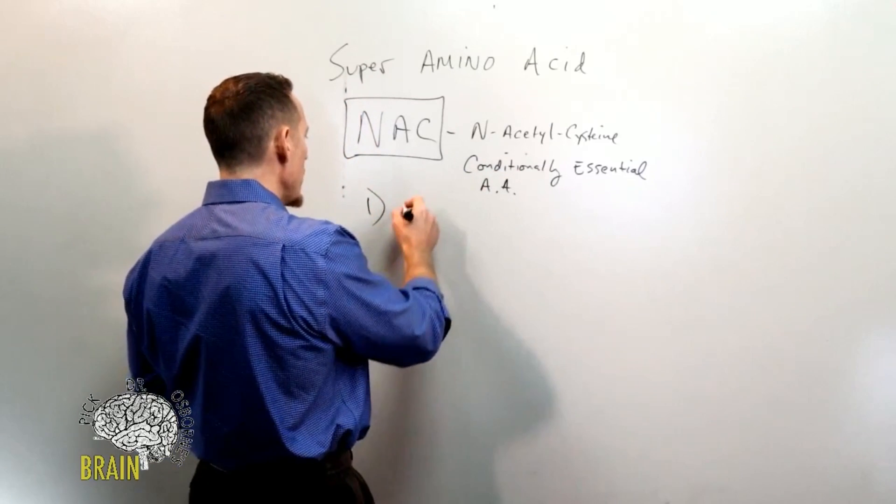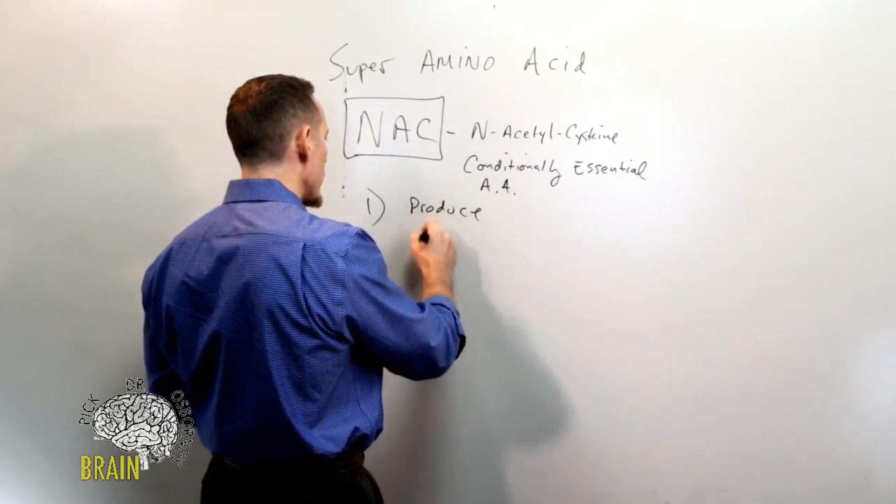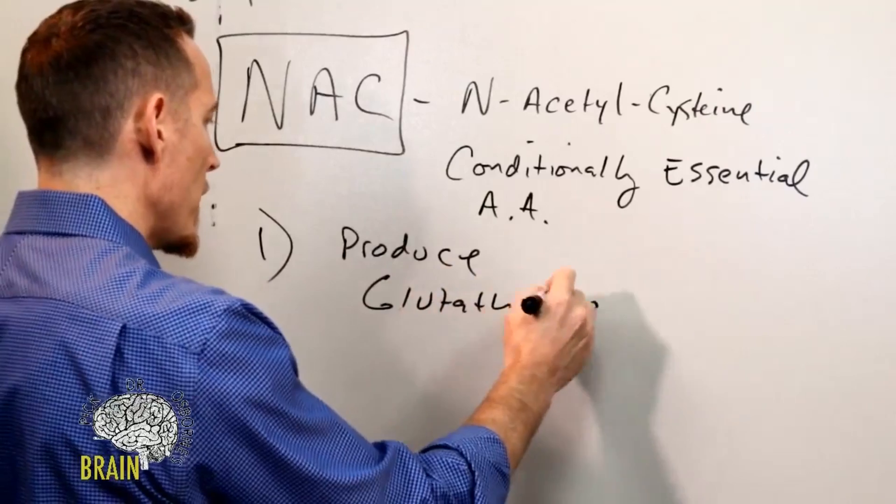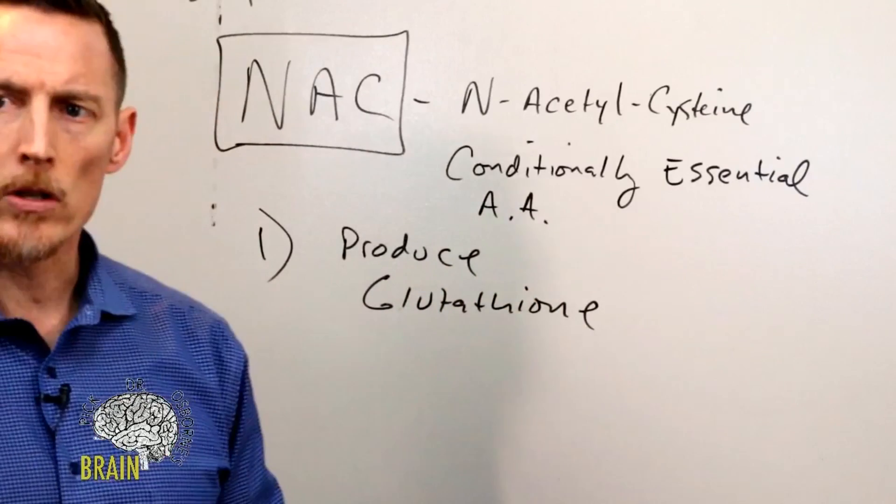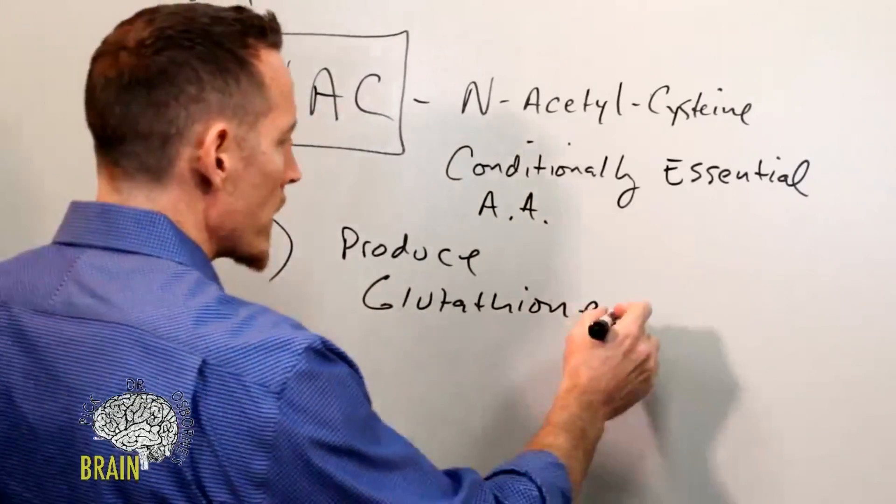One of its primary functions is to produce a substance known as glutathione. And I have a slide for you we can pop up as well, just to show you some of the different functions of N-acetylcysteine. But it produces glutathione. Now, why is this important?